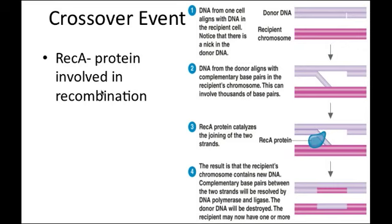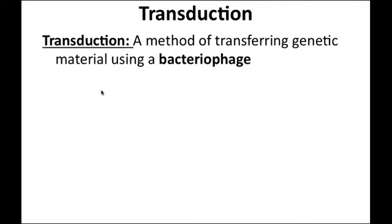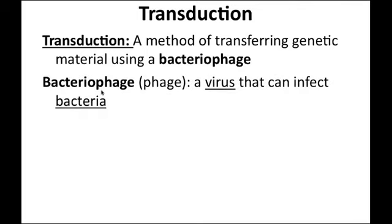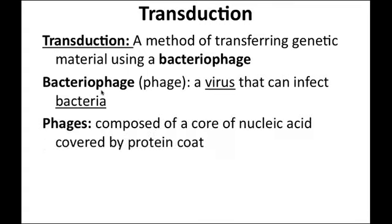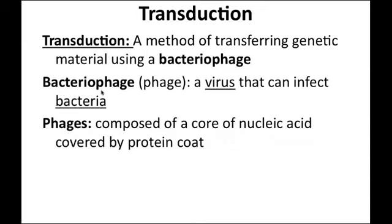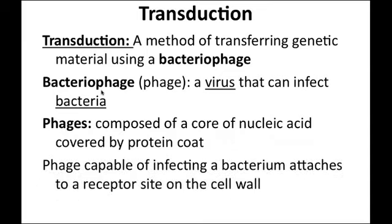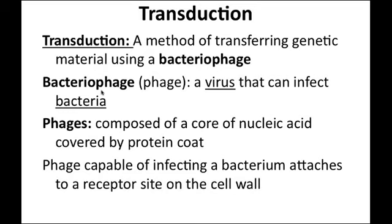Cells can gain unique genes through recombination events facilitated by specialized enzymes. Transduction is different — it uses bacteriophages or viruses to transfer genetic information. A bacteriophage is a virus that infects bacteria; it's composed of nucleic acids covered by a protein coat and has the ability to infect bacterial cells and transfer genetic information into them.